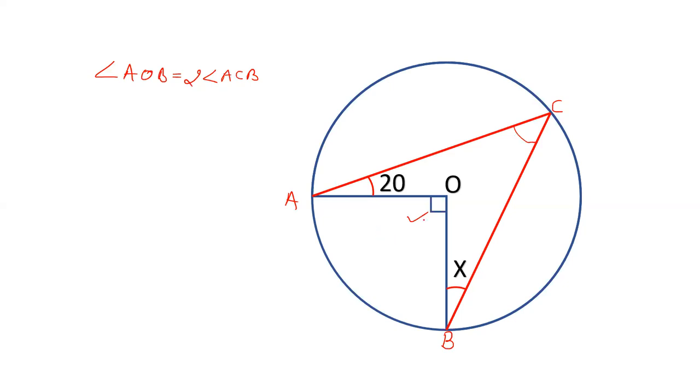First of all, this value AOB is 90 degrees and therefore angle ACB is 45. This is the concept. Now let us try to find out the value of x.